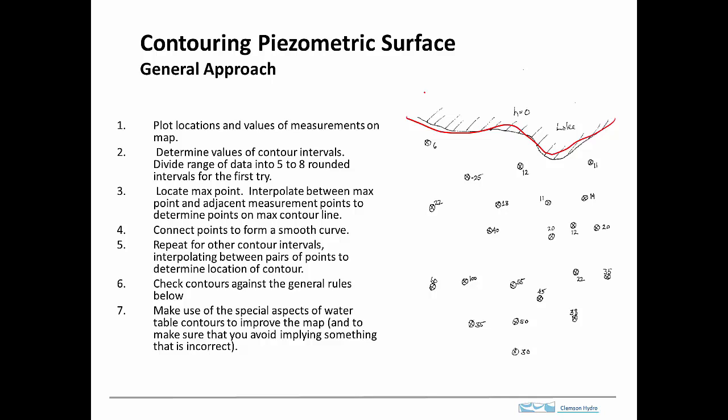The general strategy I recommend is to first determine the contour interval you'll use. I generally recommend five to eight contour intervals. Find the max and the min point and divide that range into five to eight intervals, and use a contour interval that's a round number — it'll make it easier to work with. In this case, the lower hydraulic head is zero and the upper is 100, so we could use a contour interval of 20 to start.